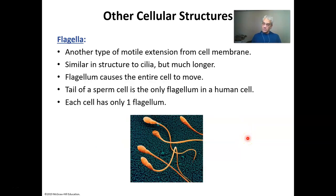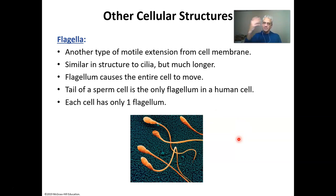Flagella is another motile structure. As I said, there's only one cell in mammals that has this, and it is sperm. Sperm have one flagellum, and it is used to propel the sperm through the uterus, through the fallopian tube, to the awaiting egg — technically a secondary oocyte. So instead of having lots of cilia at the cell surface, you have one flagellum, and that flagellum acts as a propeller.